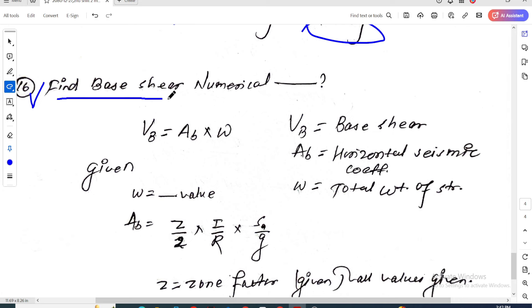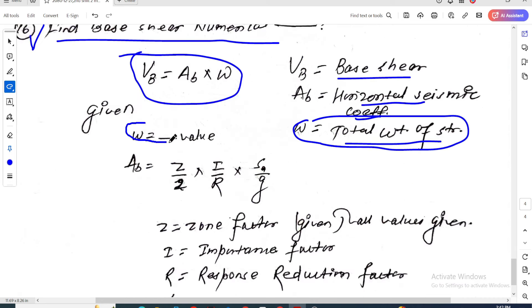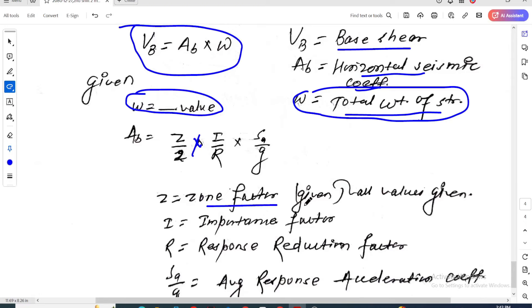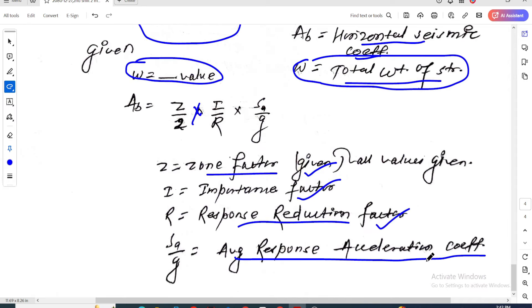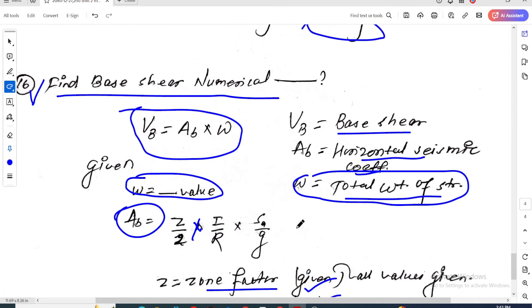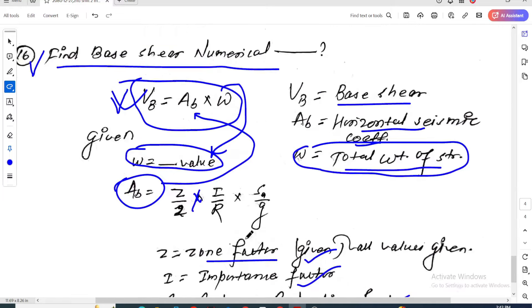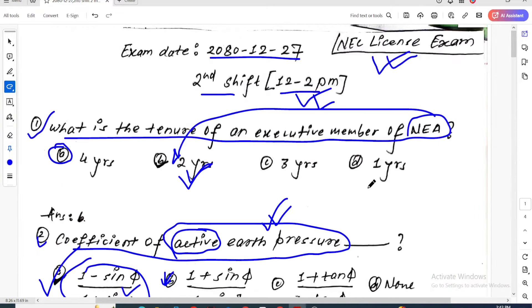Last question: Find the base shear. The formula for base shear is VB equals Ah times W, where Ah is horizontal seismic coefficient and W is total weight of structure. The seismic coefficient formula is Z divided by 2 times I times Sa divided by g divided by R, where Z is zone factor, I is importance factor, R is response reduction factor, and Sa is response acceleration coefficient. All values are given, so put them in to calculate base shear.